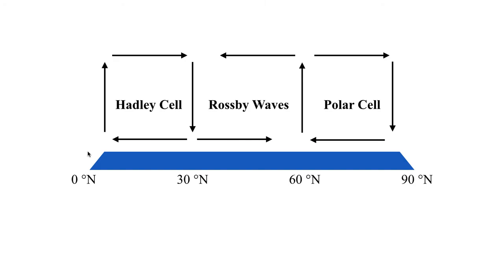That's just an overview of the circulation. Hadley's cell usually occurs between zero degrees north and 30 degrees north. Polar cell between about 60 degrees north and 90 degrees north.